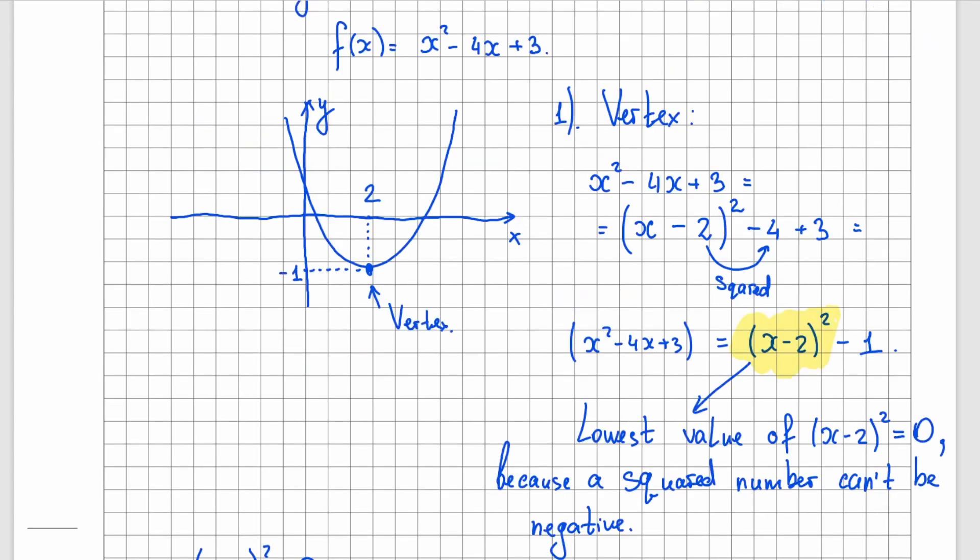Now how can we find the points of intersection with y and x-axis? Let's start with the y-axis. If you look at the graph, you will realize that the x-coordinate of this green point is equal to 0.